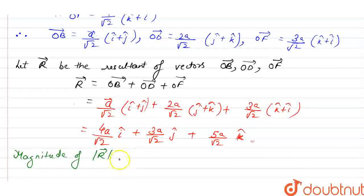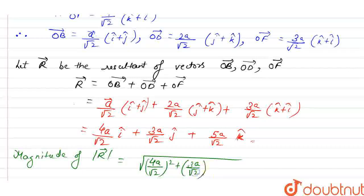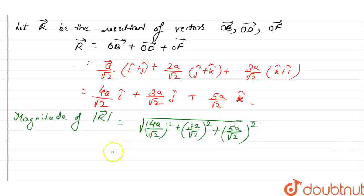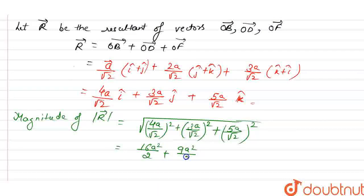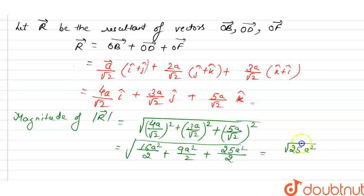Now we find the magnitude of vector R: |R| = √[(4A/√2)² + (3A/√2)² + (5A/√2)²] = √[(16A²/2) + (9A²/2) + (25A²/2)] = √(25A²) = 5A. So the magnitude of the resultant is 5A. That's all, thank you.